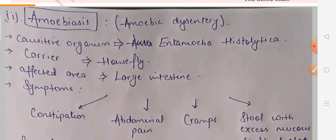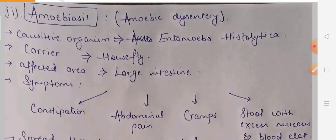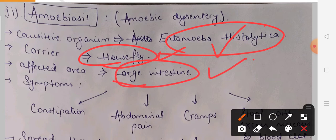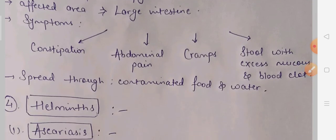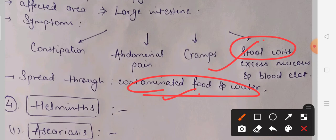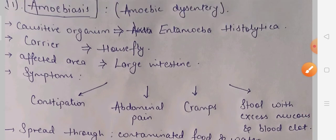The second disease is amoebiasis, also known as amoebic dysentery. Its causative organism is Entamoeba histolytica. The vector for this disease is the house fly, which carries the organism on its legs and contaminates our food and water. The affected area is our large intestine. Symptoms include constipation, abdominal pain, cramps, and in some cases stools with excess mucus and blood clots. The disease spreads through contaminated food and water.